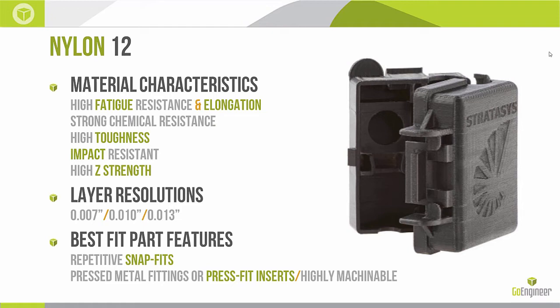Nylon 12 is great for matching functional prototypes to your eventual end-use part. It has strong chemical resistance, and it's chemically resistant in a way that's different from the Ultem materials. An example I ran into about a year ago was at a foundry evaluating 3D printed patterns for sand casting. This foundry used a sand mixture with a phenolic adhesive, and nylon was the only FDM material that best fit that application — more so than the Ultems, PC, or even PPSF.